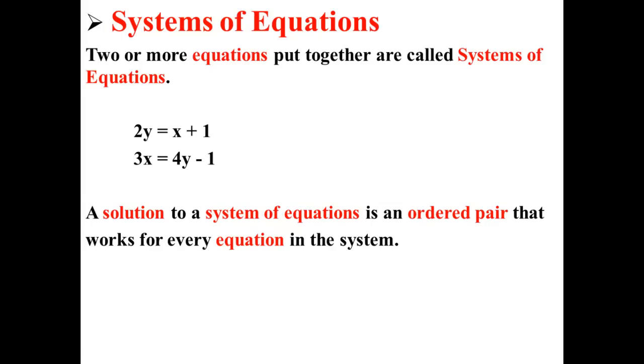In previous lectures, we talked about systems of equations. Two or more equations put together are called systems of equations. For example, 2y equals x plus 1 and 3x equals 4y minus 1 is a system of equations.